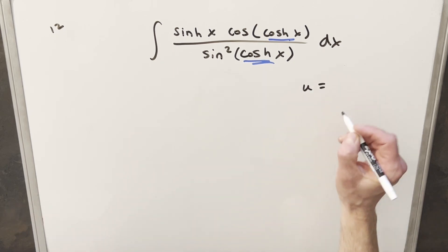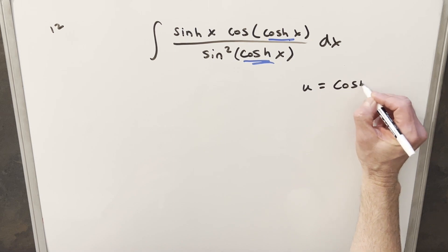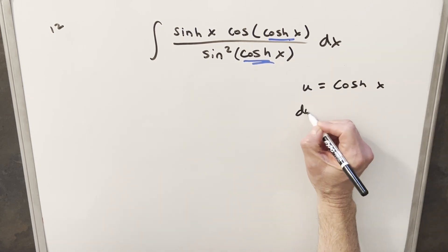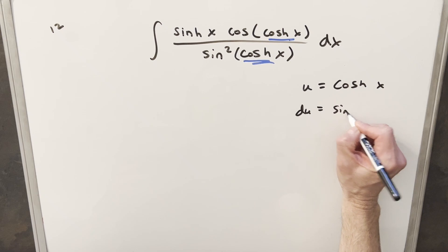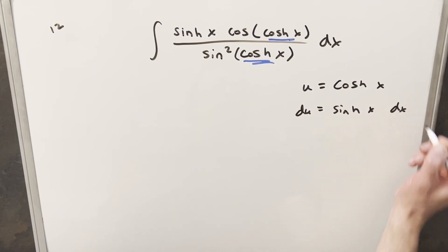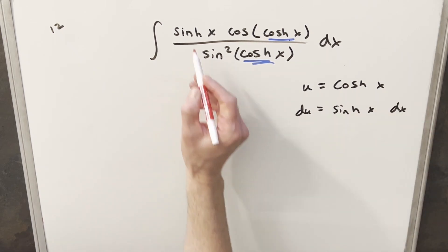So I'm going to call my u equal to just cosh x. We'll take a derivative, so then our du value here is just going to be sinh x dx. And that seems like it's going to help us, because we have our sinh x right here and we have the dx right here.